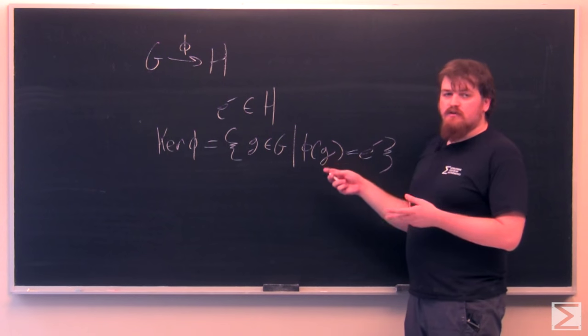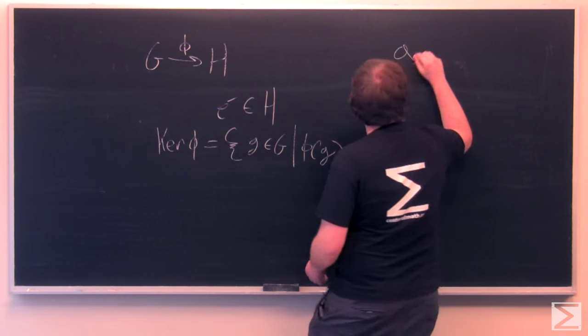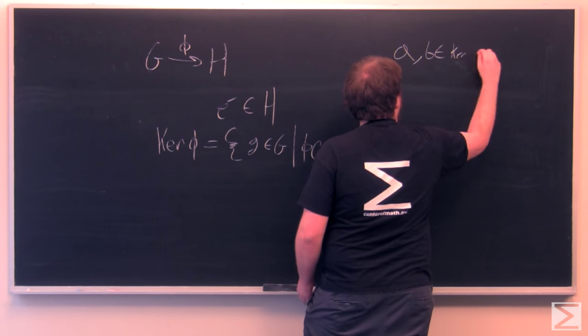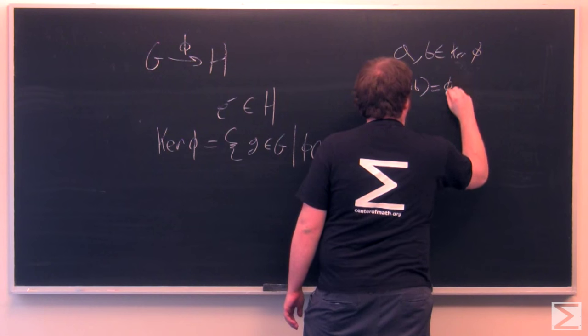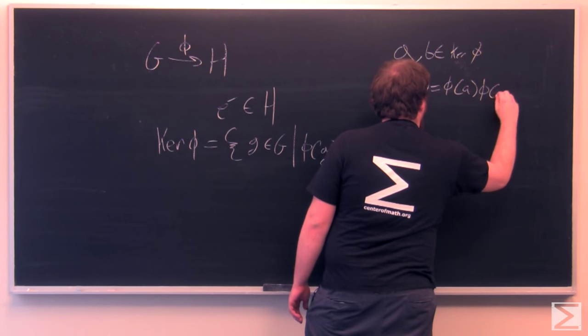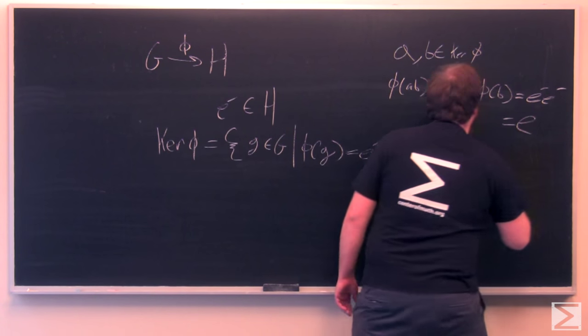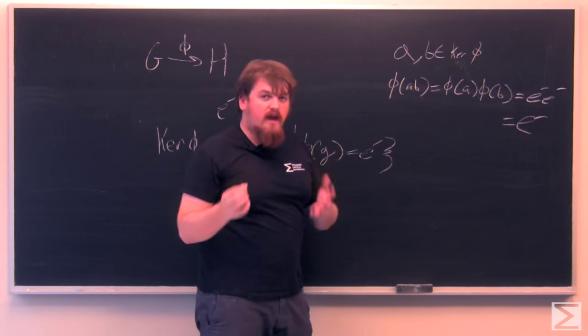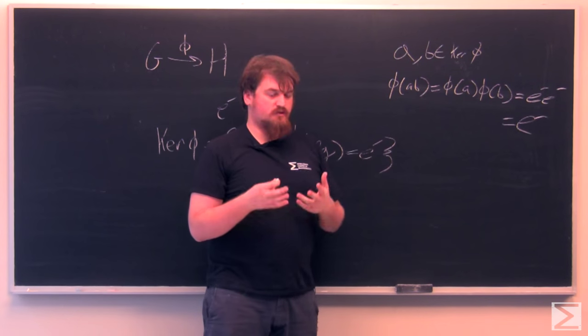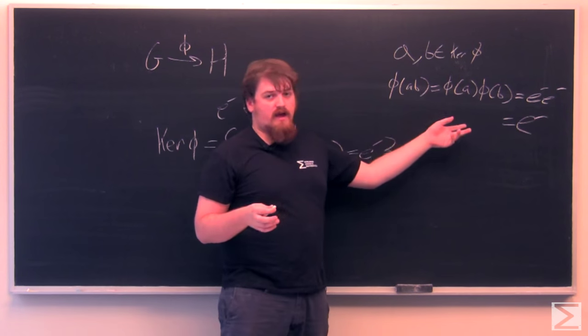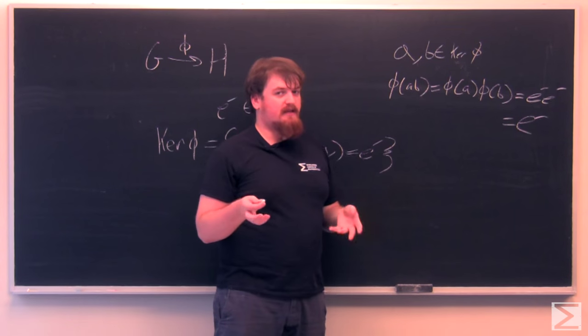If you think about this, this is going to be a subgroup rather than just a subset of G. If A and B are both in the kernel of phi, then phi of their product, because homomorphisms respect group structure, is going to be the product of phi of A and phi of B. Each of those have to be the identity of H, E prime, and the identity times the identity is the identity. So AB is mapped by phi to E prime and thus AB is also in the kernel of phi.